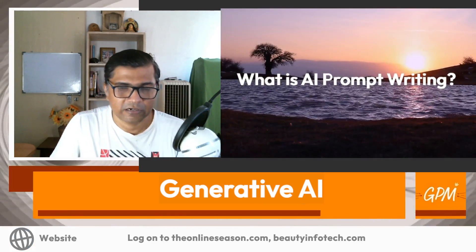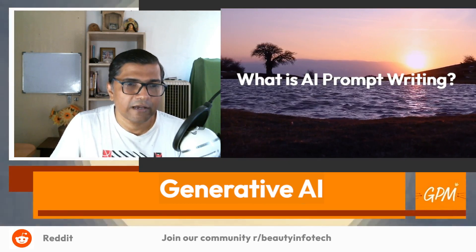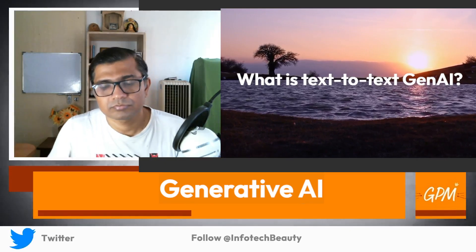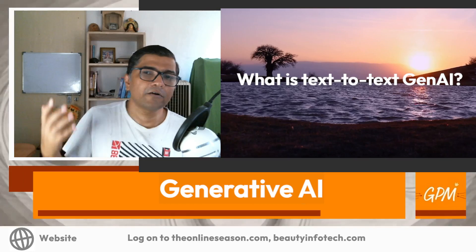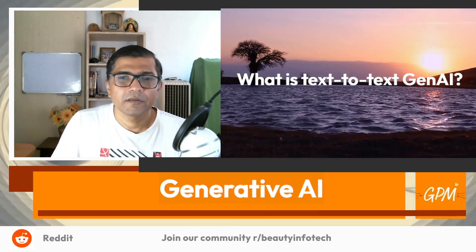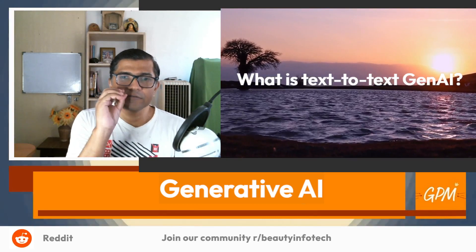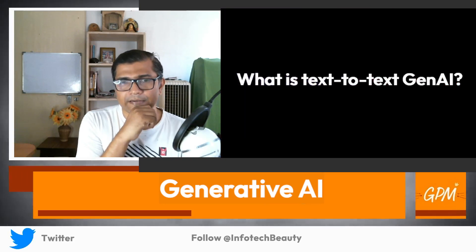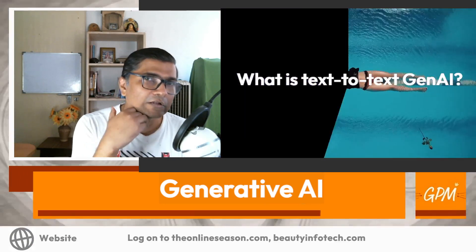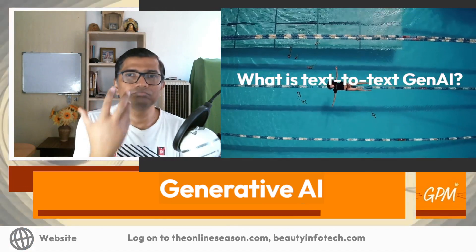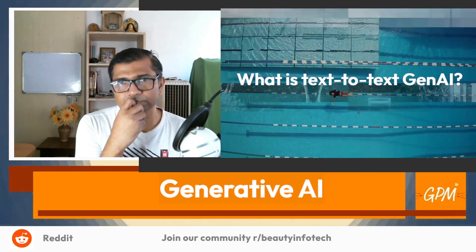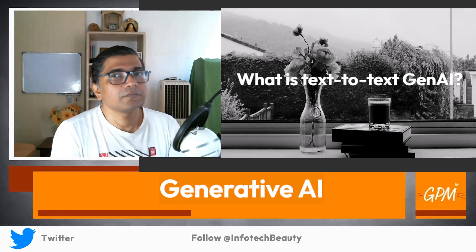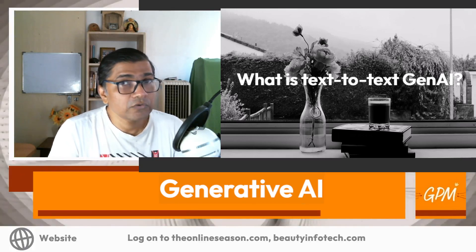The next thing is text-to-text generative AI. What is text-to-text generative AI? That means your AI prompt is understanding the text you are sharing with it — whether that's Google Bard or ChatGPT — and it creates content relevant to your topic and answers you more specifically and in detail.